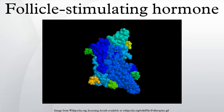The sugar part of the hormone is composed of fucose, galactose, mannose, galactosamine, glucosamine, and sialic acid, the latter being critical for its biologic half-life. The half-life of FSH is 3 to 4 hours.